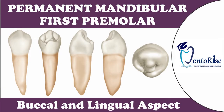The permanent mandibular premolars are 4 in number — the 1st premolar and the 2nd premolar on the right and the left side. In this video, we will be dealing in detail about the dental anatomy of permanent mandibular 1st premolar, specifically from the buccal and the lingual aspect.